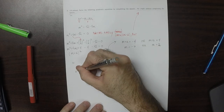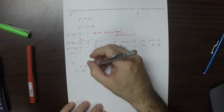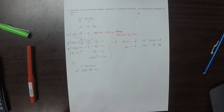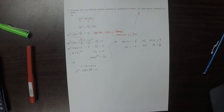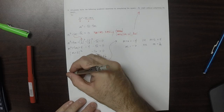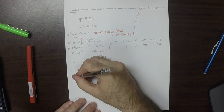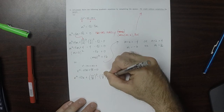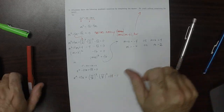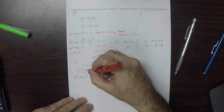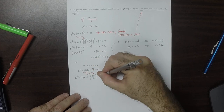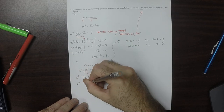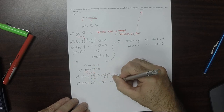Let's do the same thing for this one. Getting one side to be 0: x squared minus 10x, subtract 8 from both sides, plus 18 equals 0. It doesn't factor easily, so we'll complete the square. That gives x squared minus 10x plus (10 over 2) squared minus (10 over 2) squared plus 18 equals 0. 10 over 2 is 5, squared is 25. So x squared minus 10x plus 25 minus 25 plus 18 equals 0.